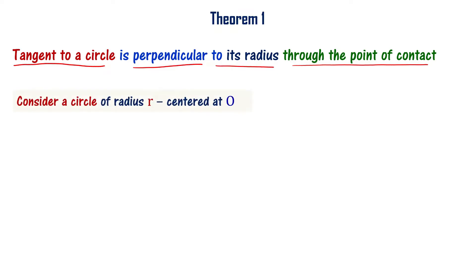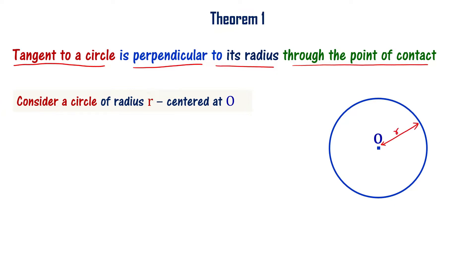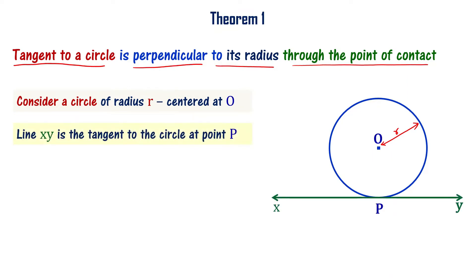Let us consider a circle of radius R centered at O as shown here. Let us draw a tangent to the circle at point P. Line XY is the tangent to the circle at point P, which is the point of contact.